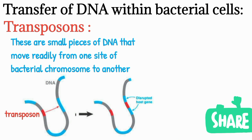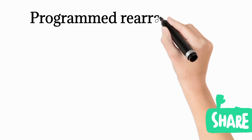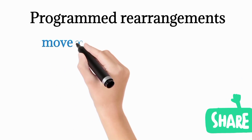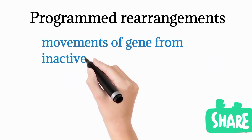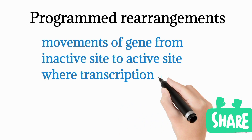This transposon, which is a small piece of DNA transferred from one side to another, carries important properties — it carries antibiotic resistant genes. This is one of the mechanisms of transfer of DNA within bacterial cells. Another mechanism is programmed rearrangements, where movement of genes from an inactive site to the active site occurs within one bacteria.